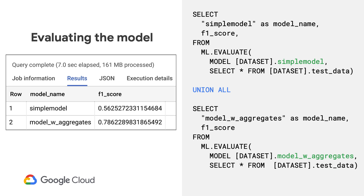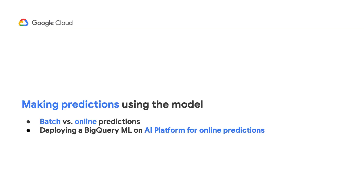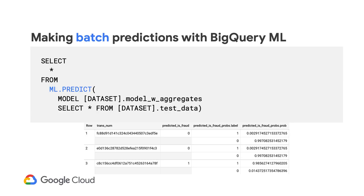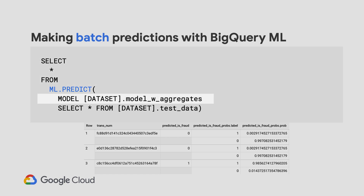Although there's room for further model improvement, we'll use the second model to demonstrate how you can use a BigQuery ML model in a streaming pipeline for real-time fraud detection. For predictions, there is batch and online prediction. For batch predictions, you make predictions on lots of data in bulk using SELECT * FROM ML.PREDICT with your model and data. Batch predictions are useful for large amounts of predictions in a single shot, but they are not optimized for real-time inference where you may need many predictions per second.